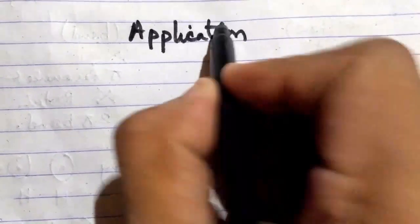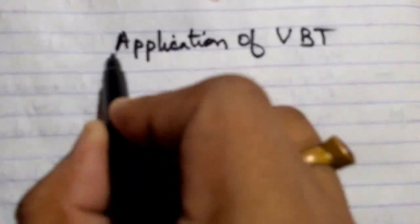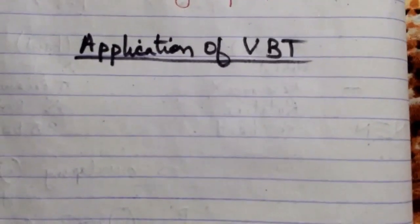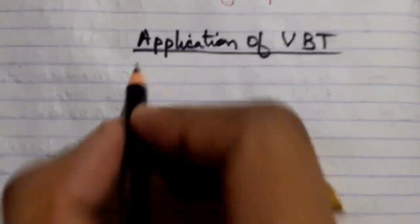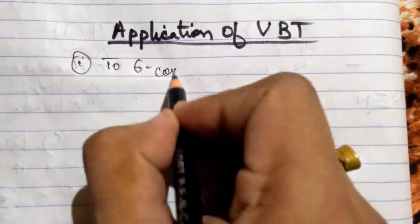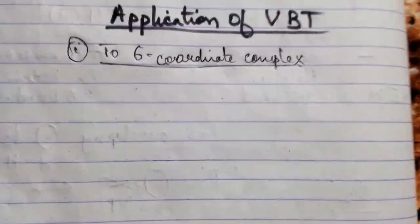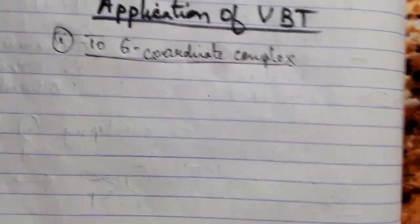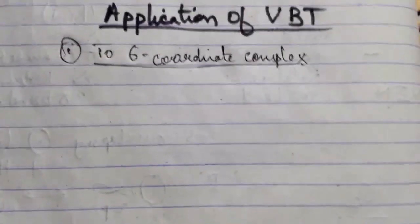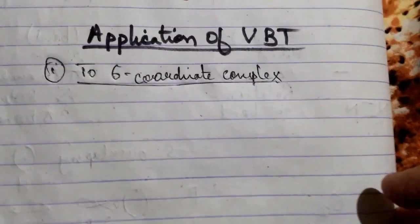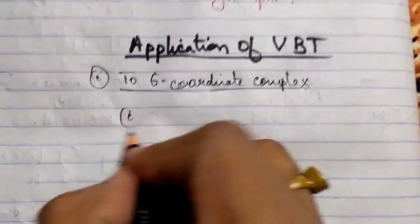Hello friends. Now we have to look at the application of valence bond theory — specifically for coordinated complex compounds. If you understand this, there will be no question in IIT Advanced, NEET, or any exam. So let's start with 6-coordinate complexes. You can refer to my last video for coordination number basics. Let's start now.